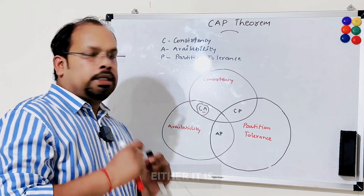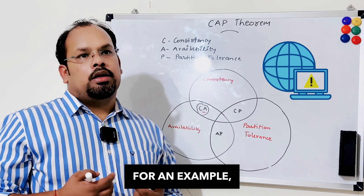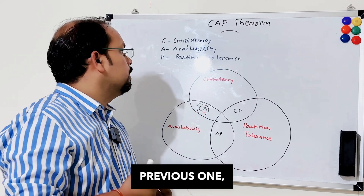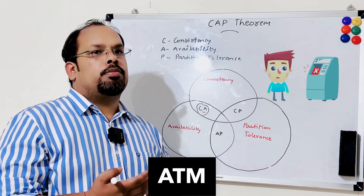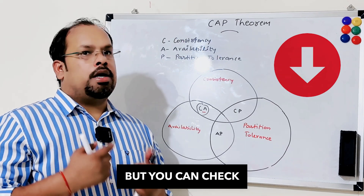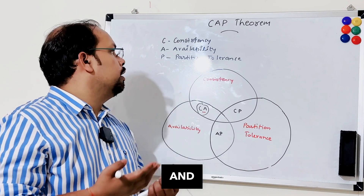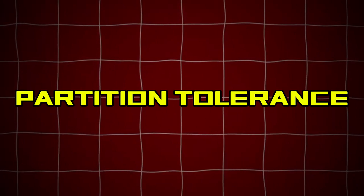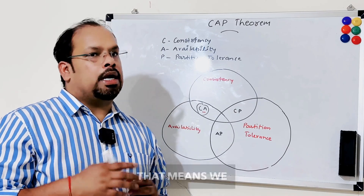The second term is availability. Availability means you will get a response for every request at all times, even during a network failure. For example, similar to the previous one — if you are checking the balance and maybe the ATM is not working or mobile banking is down, but you can still check the balance from net banking and you will get the balance.